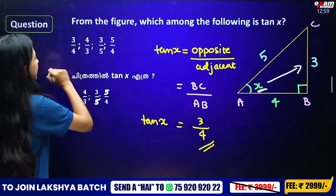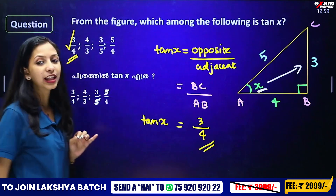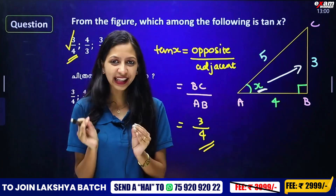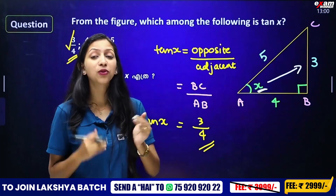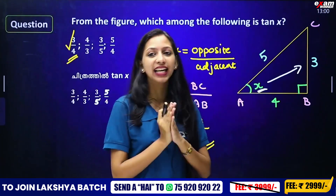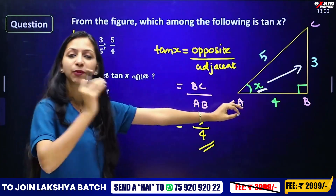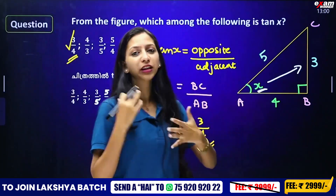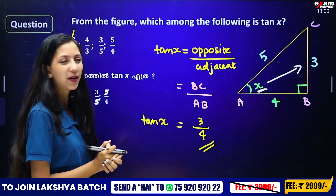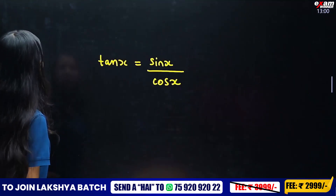The first option, 3 by 4, is correct. We use the 3-4-5 Pythagorean triplet here. Now let's move to the next question.